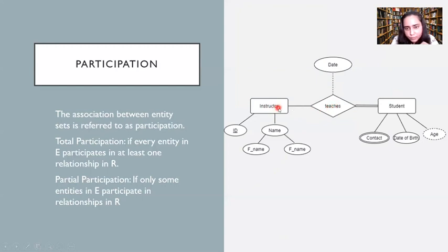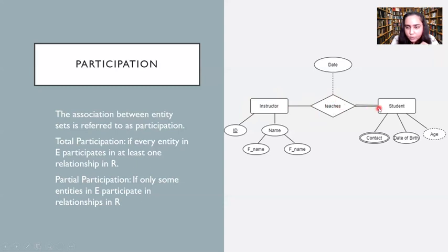For example, in a university some instructors teach only in particular semesters and do not teach during some parts of the year. Those instructors are still part of the university but are not teaching right now, so they are not connected with any students and would not be participating in the teacher's relationship. Students, however, are always connected with some instructor, which is why a double line indicates that each student is connected with some instructor — students are fully participating.